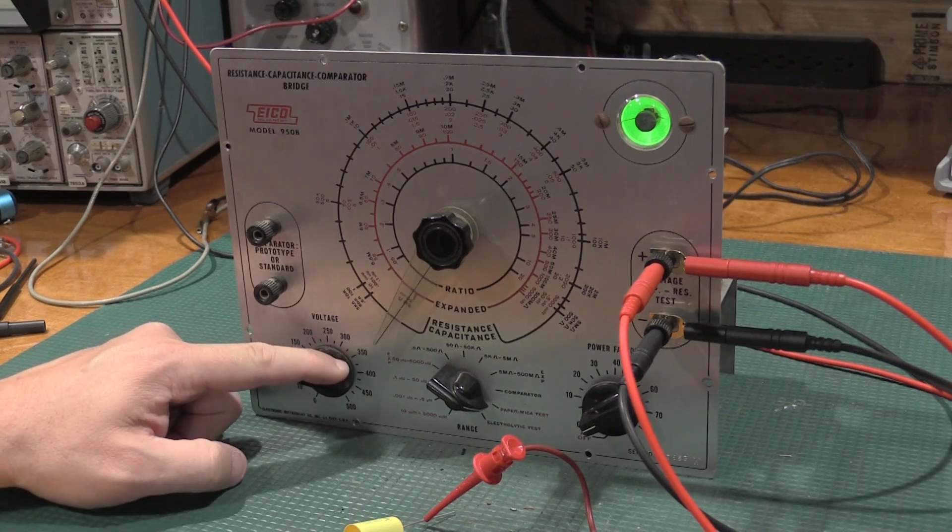Okay. We have a non-polarized capacitor hooked up in circuit. Just use one of these really good high quality ones that I use in restorations. And we have this on the paper and mica test. Let's roll this up. Kind of see what voltage comes across the cap with the meter. Yeah. We'll put about 300 volts across it. Let's see what it does.